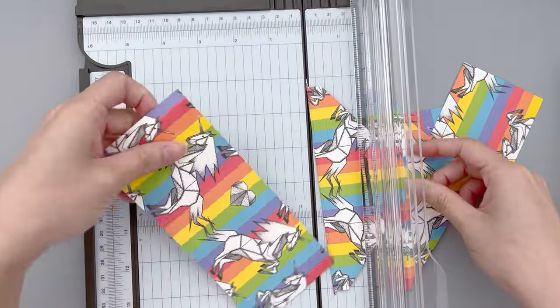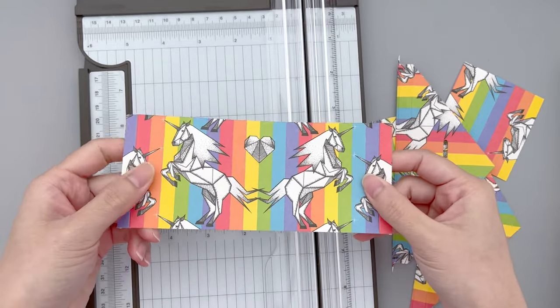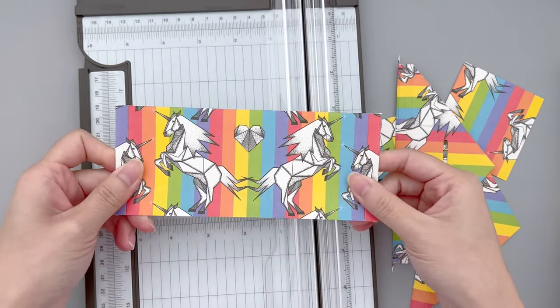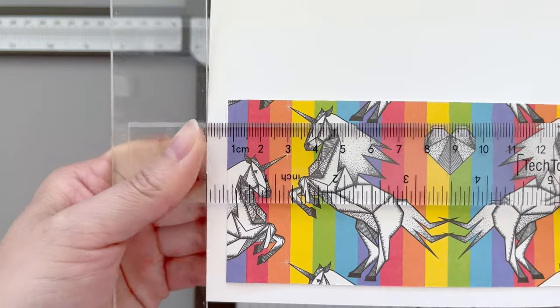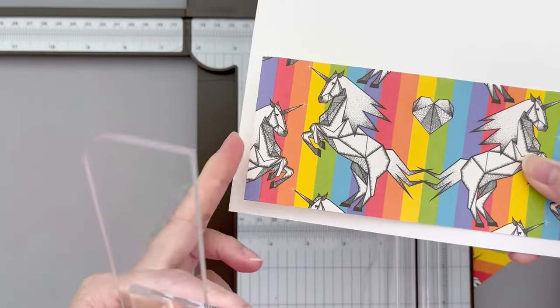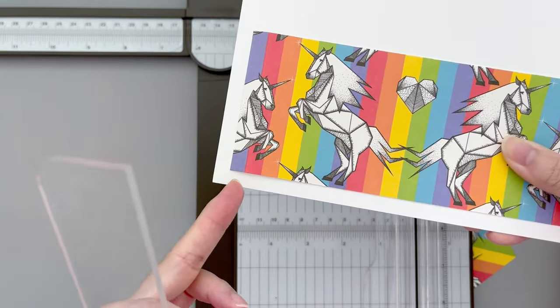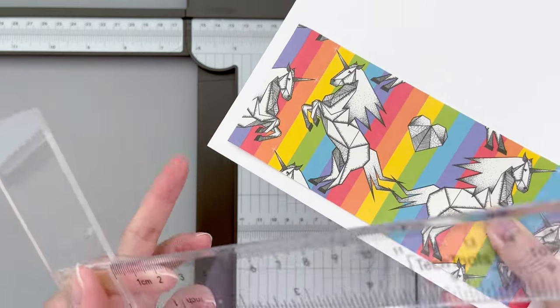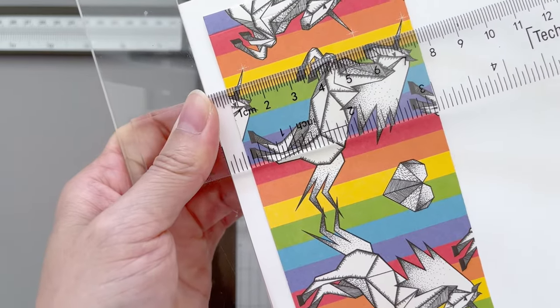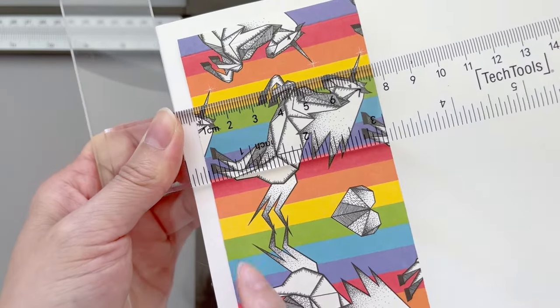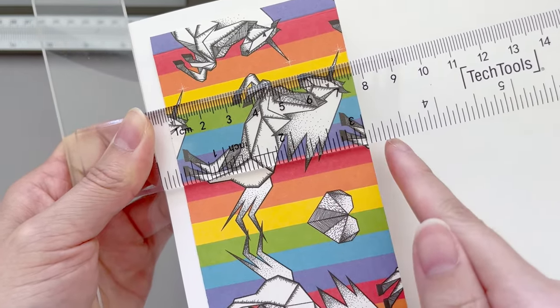For my project today, I trimmed it down to 6 3/8 for the long side and 2 3/4 inches for the short side. Then we can move on to make the actual white envelope. Now this part is really creative. You can really make it whatever size you want it to be.